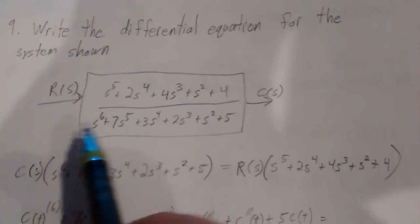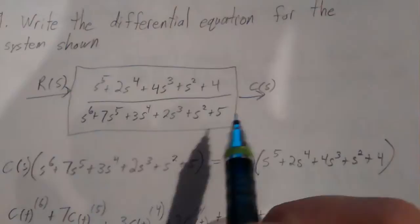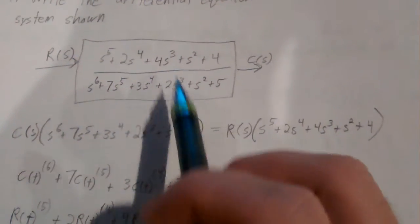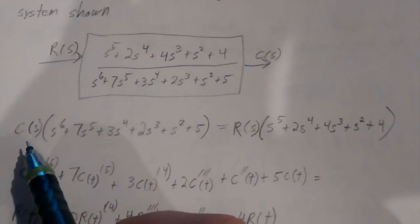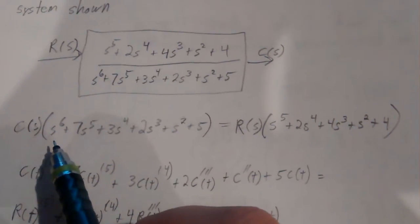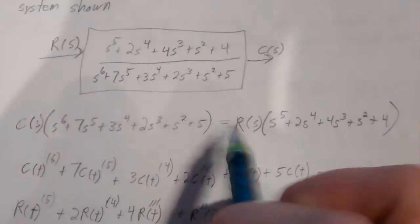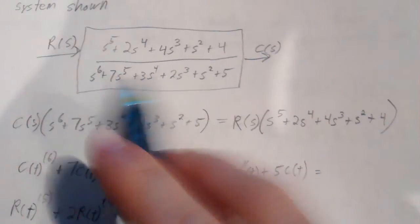We have our input R of S, our transfer function, and our output C of S. Since the transfer function is output over input, we can write this expression as output C of S times this denominator equal R of S times the numerator.